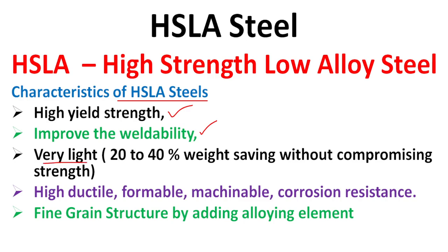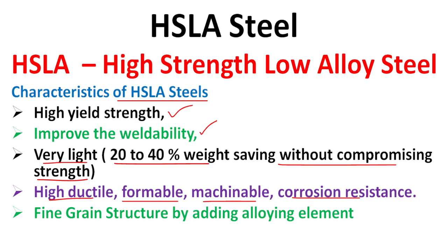Key characteristics of HSLA steel include high yield strength and improved weldability. The material is lightweight, offering 20 to 40 percent weight saving without compromising the strength of the material.